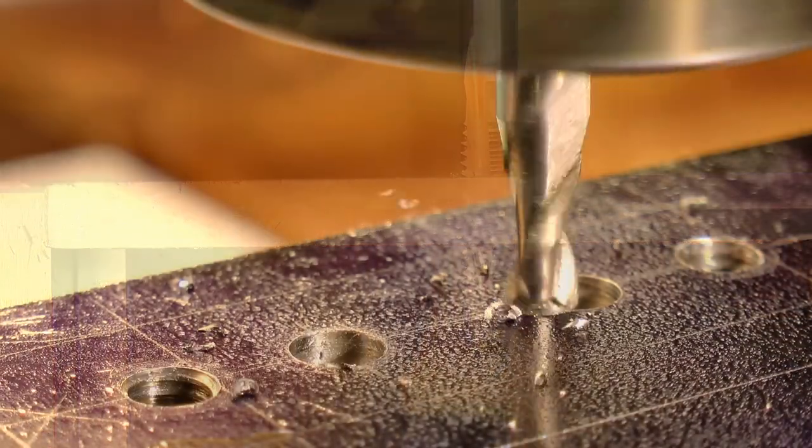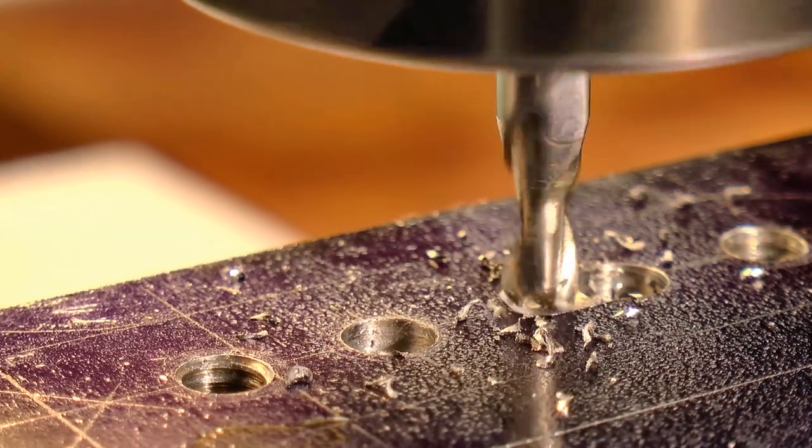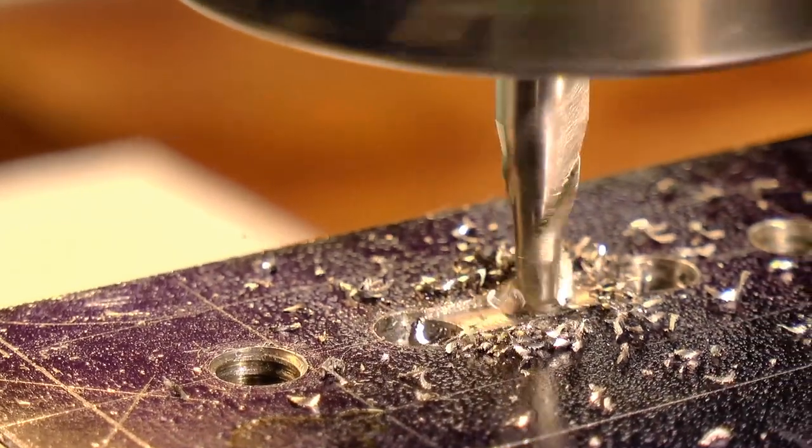To make the slot, I started out with an undersized slot mill, and then once I'd broken through, I moved the cutter closer to the line on each side to bring the slot to size.